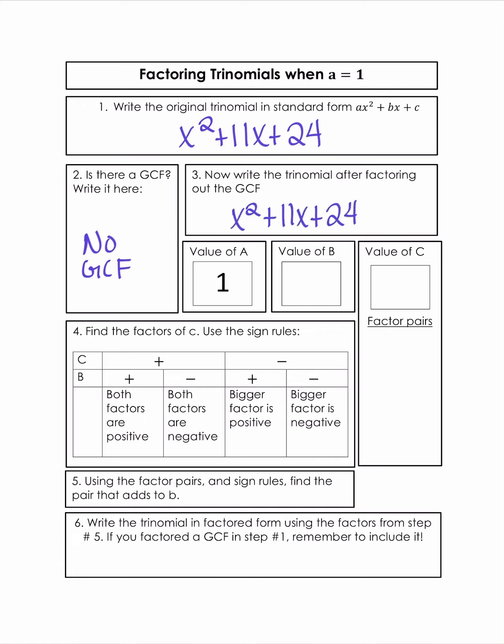So now we need to identify the values of A, B, and C. Remember that our trinomials in standard form, so that's ax squared plus bx plus c. So the value of A will be the coefficient of x squared. Remember, that's just going to be 1. B is 11, and C is 24.